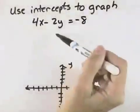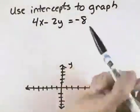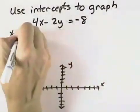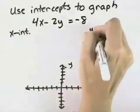We want to use intercepts to graph 4x minus 2y equals negative 8. So we need to find the x-intercept and we also need to find the y-intercept.